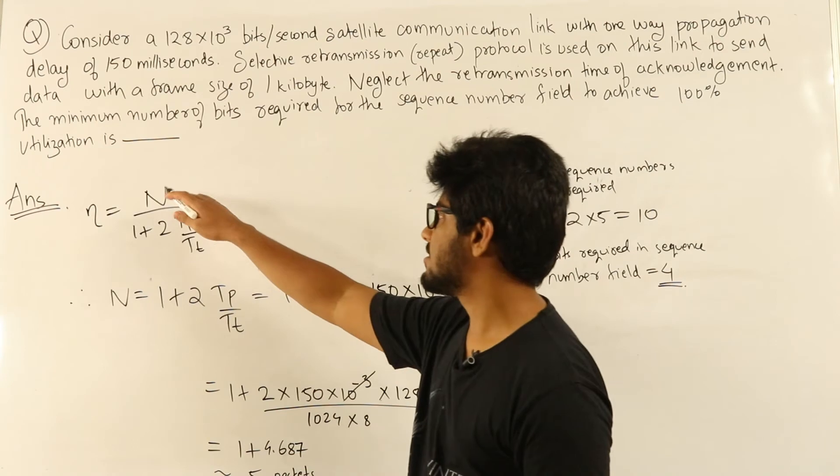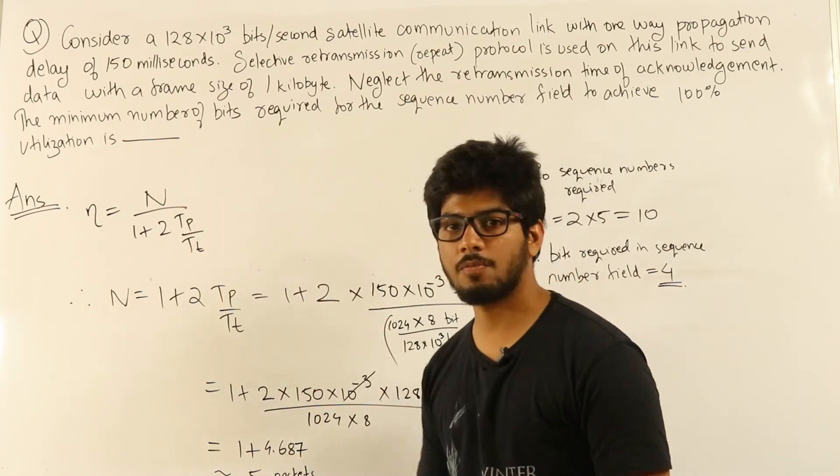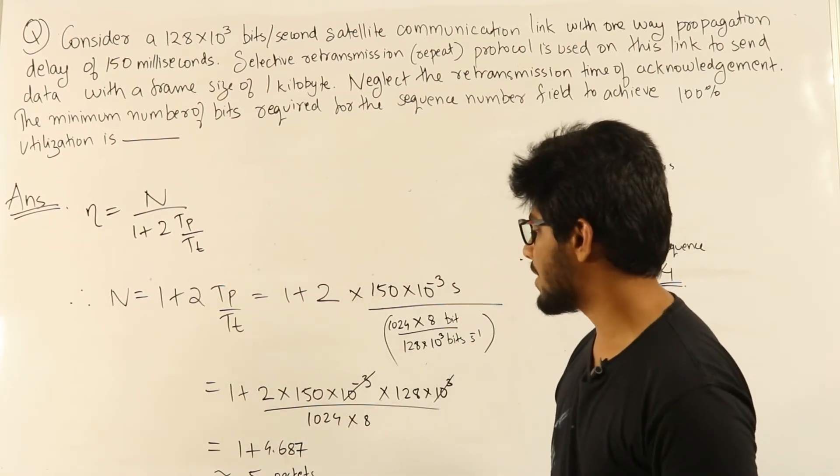Now, the number of packets has to be an integer less than or equal to 5.687, which means 5 packets. So in each round we will be sending 5 packets.